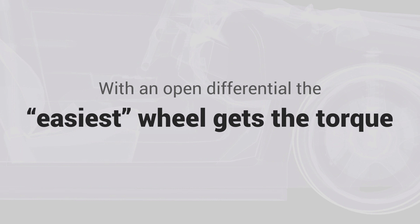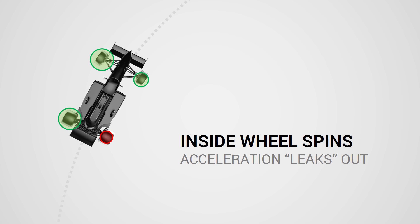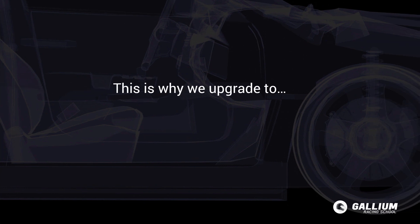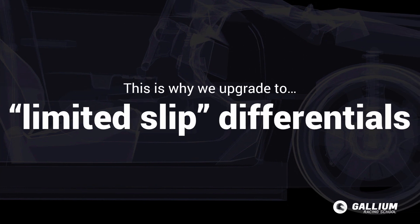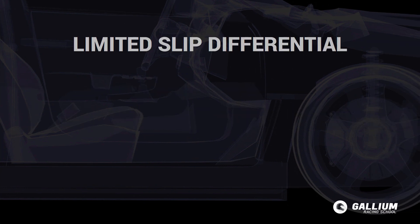With an open diff, the wheel with less resistance gets the torque. If we apply too much power the inside tyre will tend to spin since it has less grip. Once that happens it's like all of our acceleration is leaking out of that wheel — it saps any acceleration we had through and out of the turn.